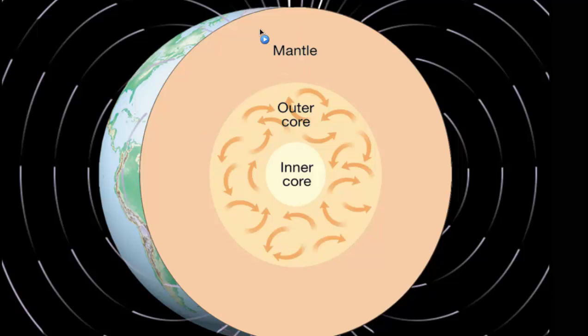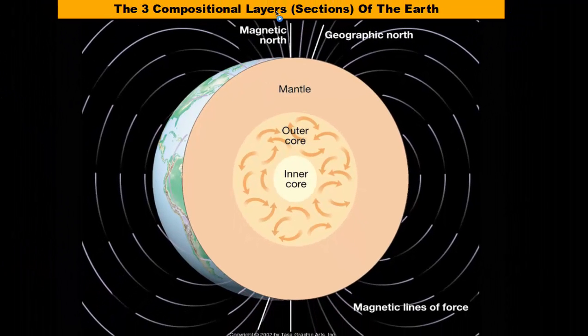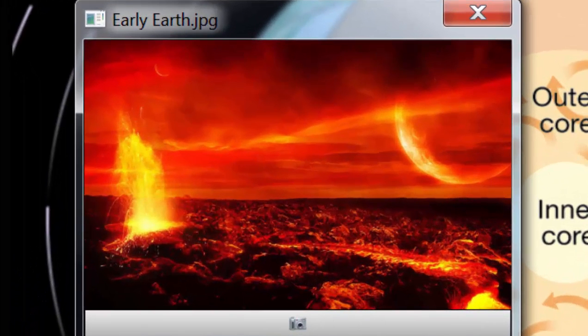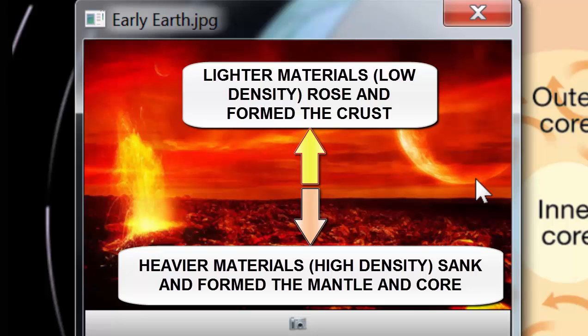The reason why we have these three main layers is because of their composition and what they're made out of. Back when the earth formed, it had a very violent birth, with a lot of impacts, heat, and molten rock and lava all over the place. Since the planet was molten, things were able to settle out — the lighter materials rose to the top because they were less dense, and the heavier, denser materials sank toward the center.